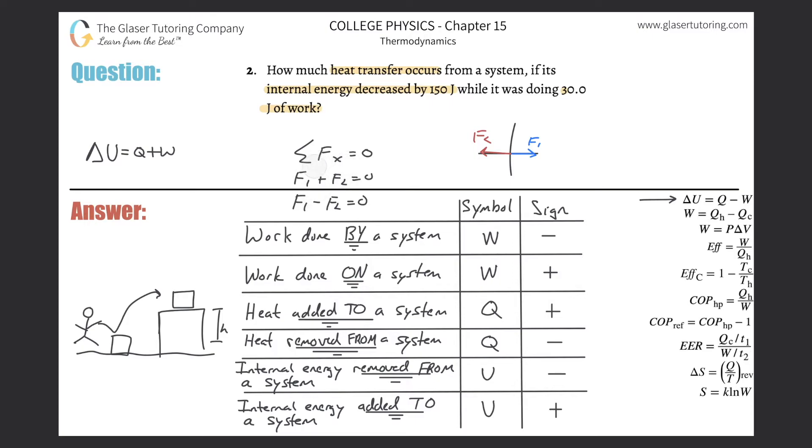In any case, the goal of this problem here is to calculate how much heat transfer occurs. So we know that that variable is Q, not to belabor the point. Let's solve this thing for Q. So we realize Q will be equal to change in internal energy minus the work.